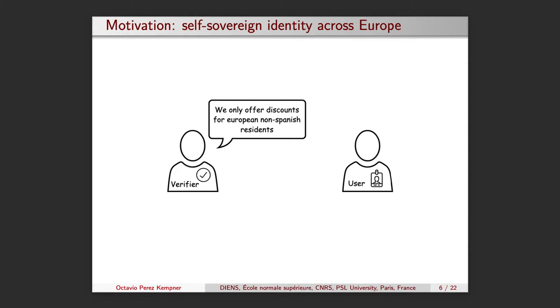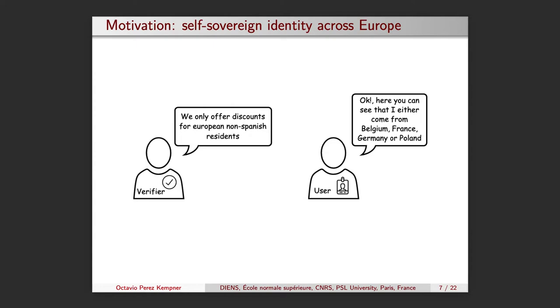What we want in scenarios like this one is to avoid such things, and find a way in which users can convince the verifier without giving away information from their country of origin. A way to convince the verifier about being European but not Spanish is to hide the issuer's identity in a set of valid countries.